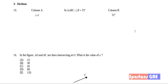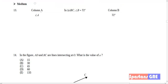Let's get started. Our first question says: Column A, Column B. In a triangle, only angle B is given — A, B, C — and it is 72 degrees. Now they are comparing between angle A and 72 degrees.